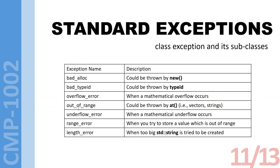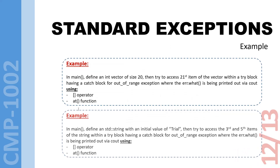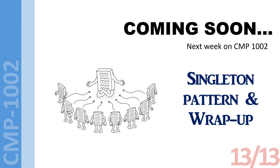For other types of errors you can check bad_cast, bad_typeid, overflow_error, underflow_error, range_error, length_error, and others. You can also base your own exception classes on the STL exception classes — it's completely up to you. The next and last part will briefly cover the singleton pattern in design patterns in C++, and we'll have a shorter wrap-up. Thank you for listening — I hope it was educational, and see you in the next video!